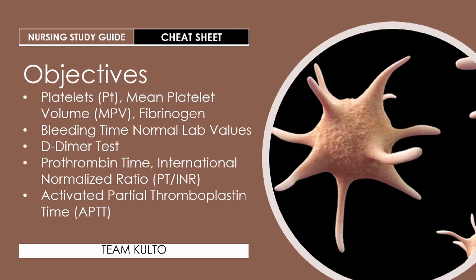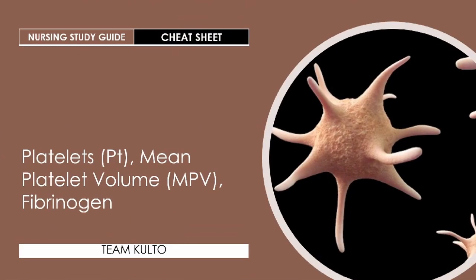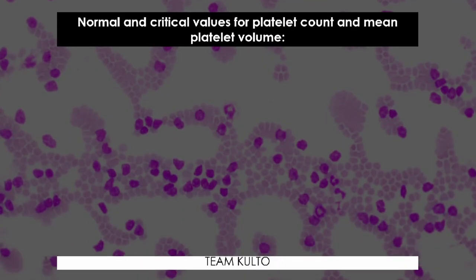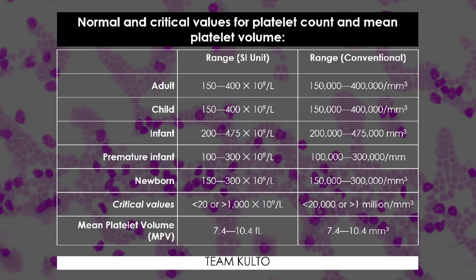Let's start with platelets, mean platelet volume (MPV), and fibrinogen. Platelets are produced in the bone marrow and play a role in homeostasis. Platelet function includes hemostatic plug formation, clot retraction, and coagulation factor activation. Now let's look at the normal and critical values for platelet count and mean platelet volume.